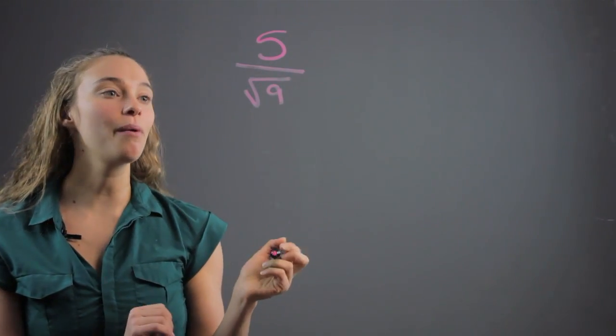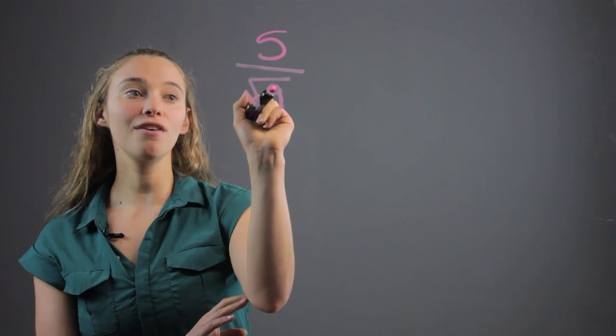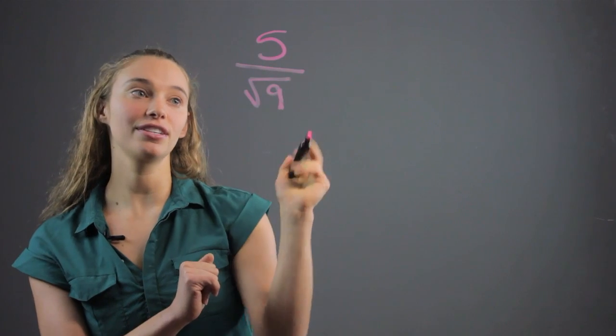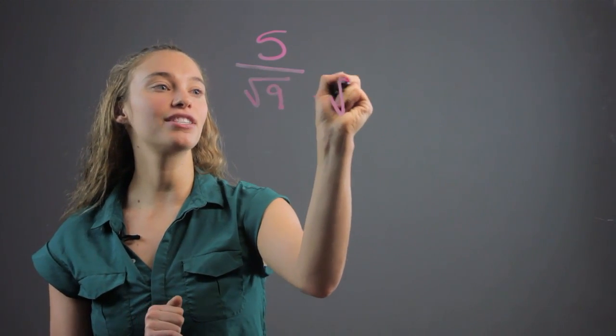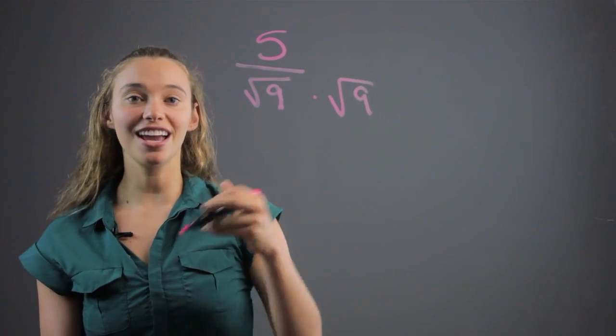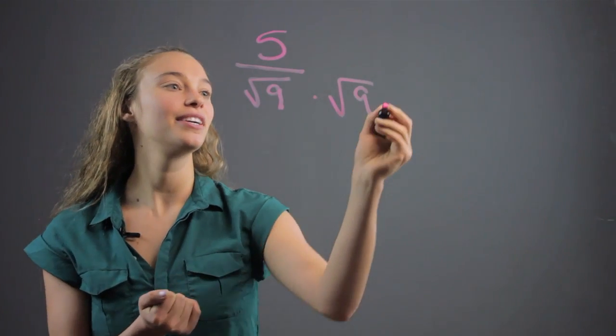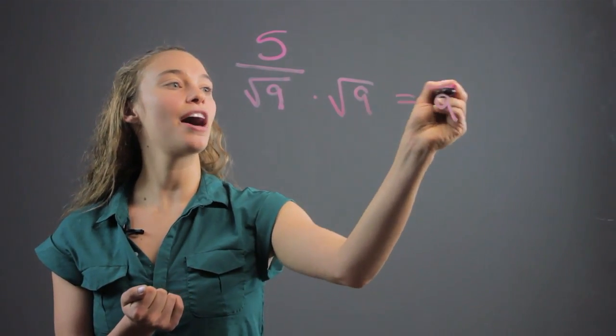So what we do is multiply what we have in the denominator by itself to get rid of the square root. If we multiply it by the square root of 9, the square root of 9 times the square root of 9 is 9, right? That's the square root of 9 squared, which is 9. So that's going to be 9 on the bottom.